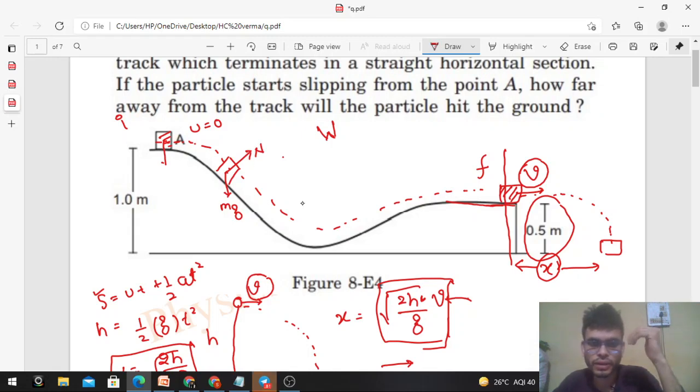Work done by all the forces: work done by normal reaction plus work done by mg equals change in kinetic energy, final kinetic energy minus initial kinetic energy. Initial kinetic energy is 0 because initial speed is 0. Work done by normal reaction is 0 because the displacement is always perpendicular to the normal reaction. The displacement is tangential to the track.